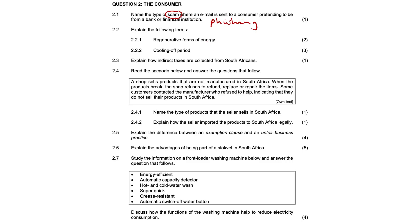2.2.1, explain the following terms. So regenerative forms of energy — these are sources of energy that are present in nature, such as the sun, wind, water, and wood. So they are continually replenished, replaced, thus should never run out. It is sustainable.